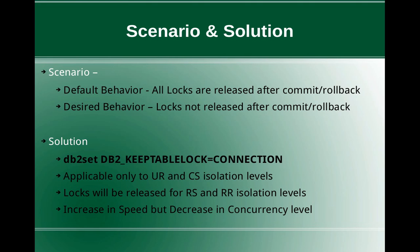Only when the connection resets will the locks be released. However, there is a limitation: it is applicable only for queries running at UR and CS isolation levels. The locks will be released for queries running under RS and RR isolation levels. There is also an important factor to consider — there is an increase in speed but a decrease in concurrency level. By not releasing the locks after the transaction commits or rolls back, we see some increase in speed for queries using UR and CS isolation levels, because we are saving the time required to acquire and release locks on every transaction.